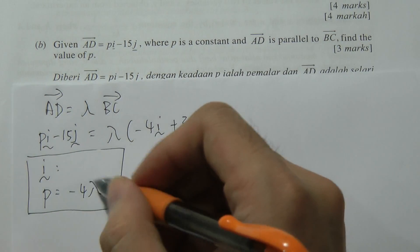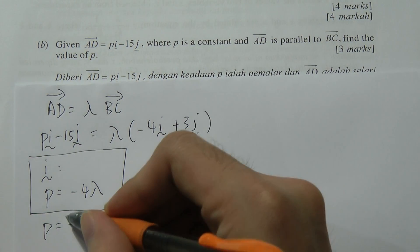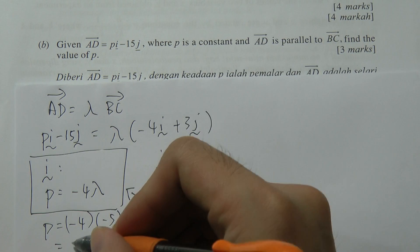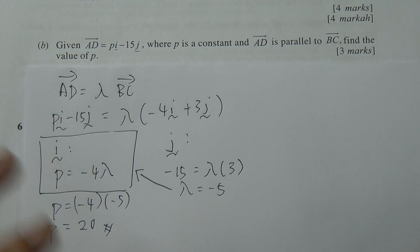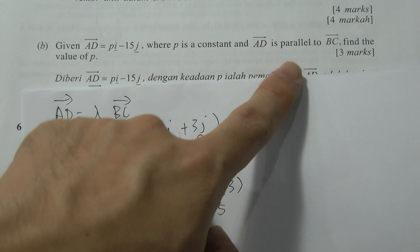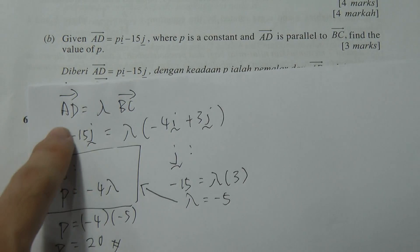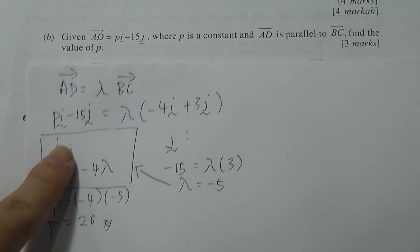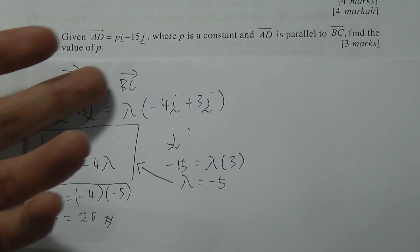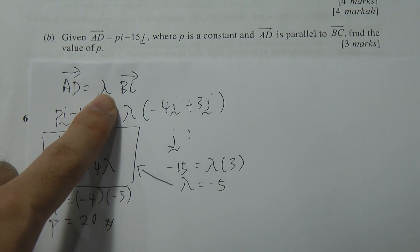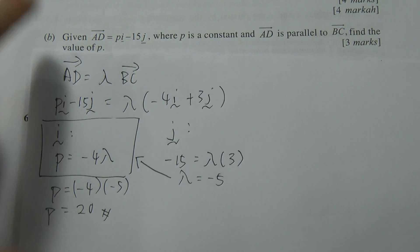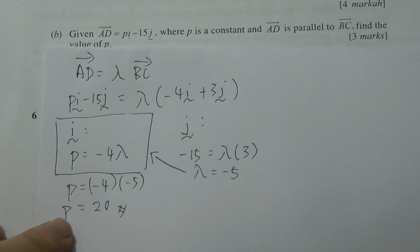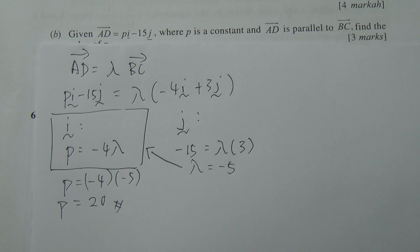Now substitute lambda equals negative 5 back into the i coefficient equation: p equals negative 4 times negative 5, which gives p equals 20. The key takeaway: when vectors are parallel, write one as lambda times the other, then compare coefficients to solve. Thanks for watching!